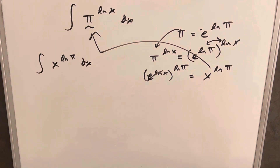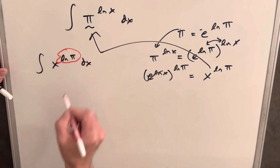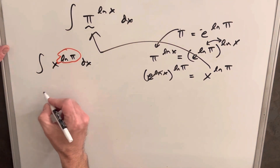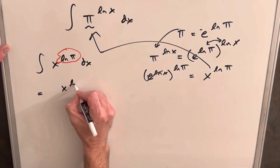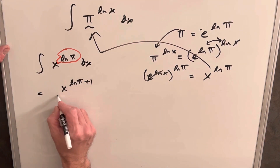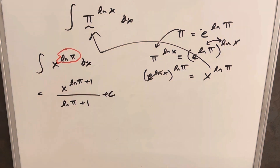The important thing to notice is that ln π is just going to be some number around one-ish — like 1-point-something. So that's going to allow us to use the power rule. We add one to the exponent, giving us x^(ln π + 1), then divide by ln π + 1. At this point, we have a correct answer.